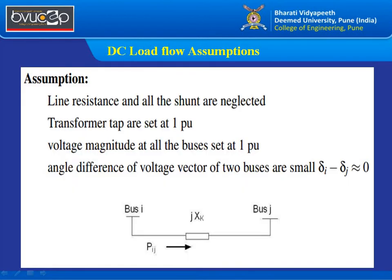Let us quickly review the DC load flow assumptions. Line resistance and shunt values are all neglected. Transformer taps are set at one per unit. Voltage magnitude is at one per unit and the angle difference between two buses should be equal to zero. For example, in the diagram, bus I and bus J have a reactance connected between them, with power flowing from bus I to bus J.